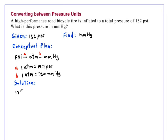Starting with 132 psi, we'll apply the first conversion factor A that says one atmosphere is equal to 14.7 psi.